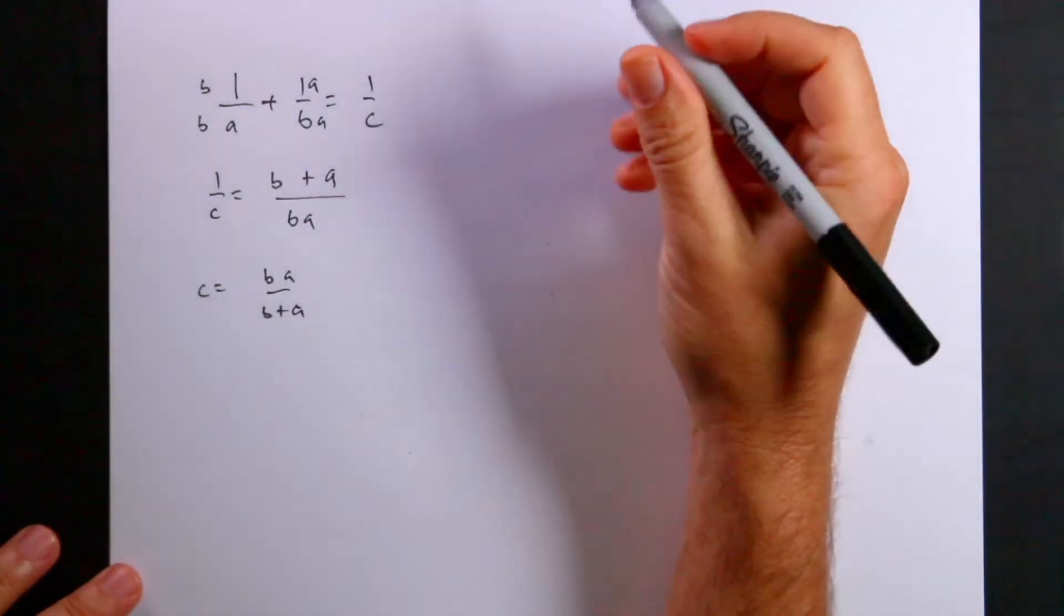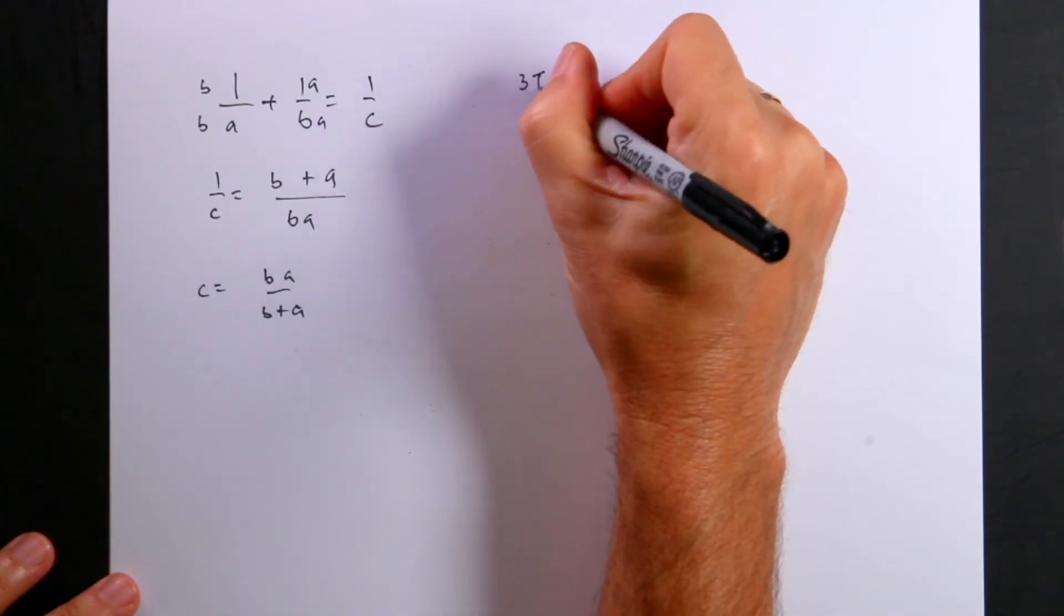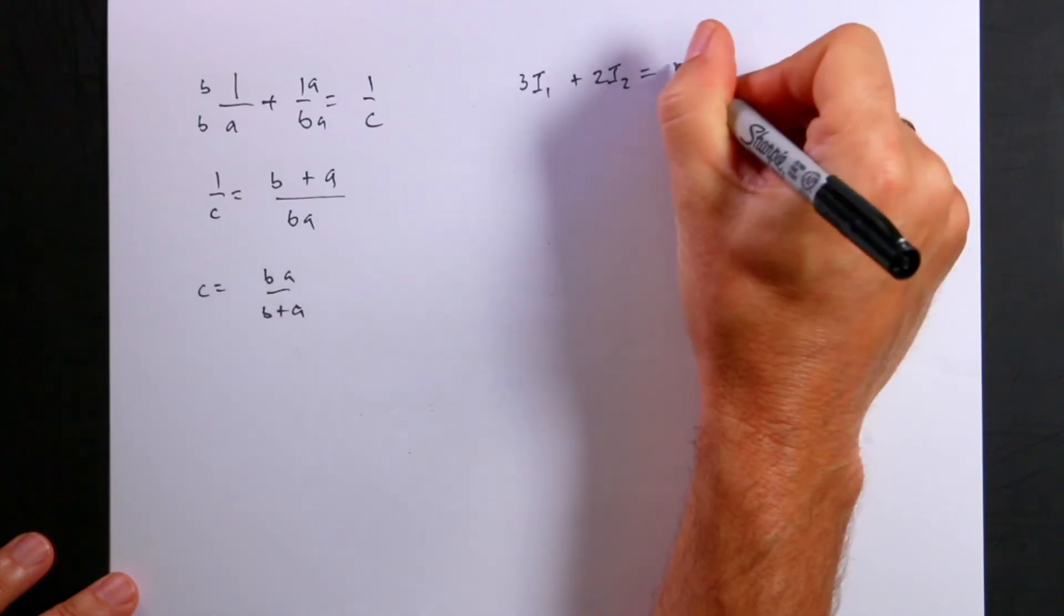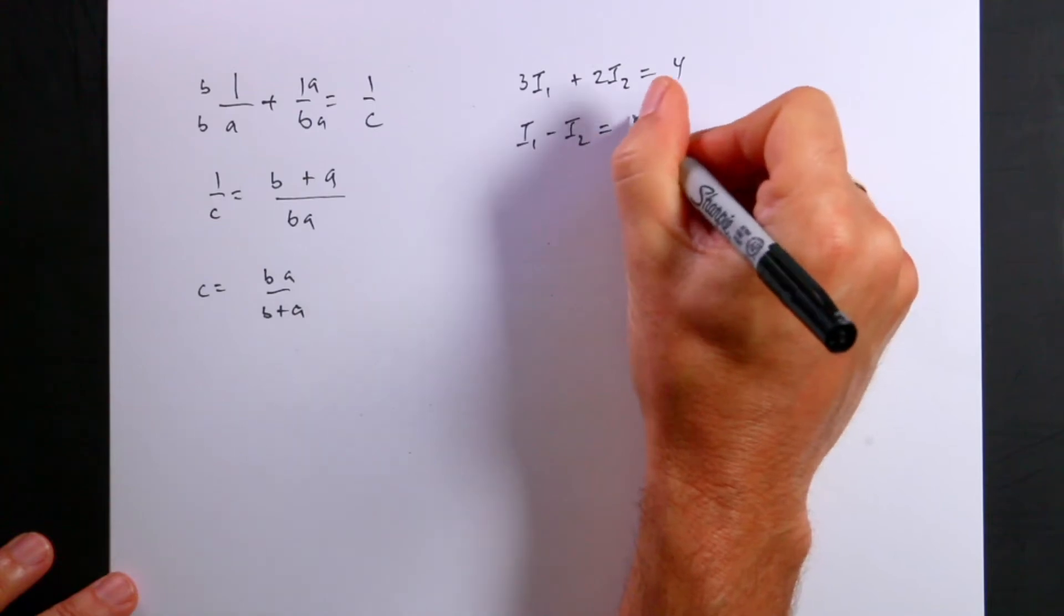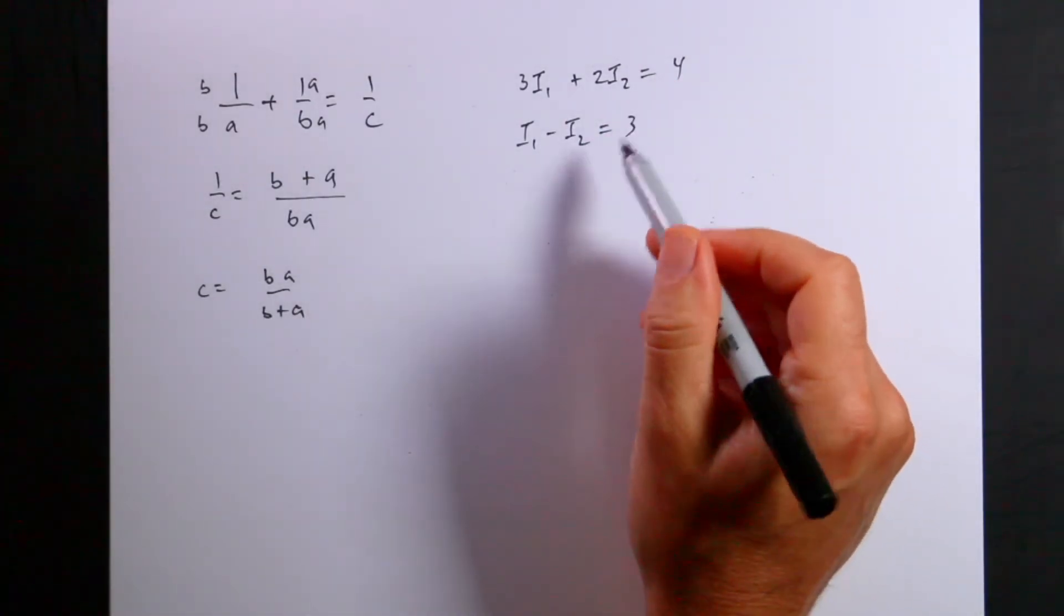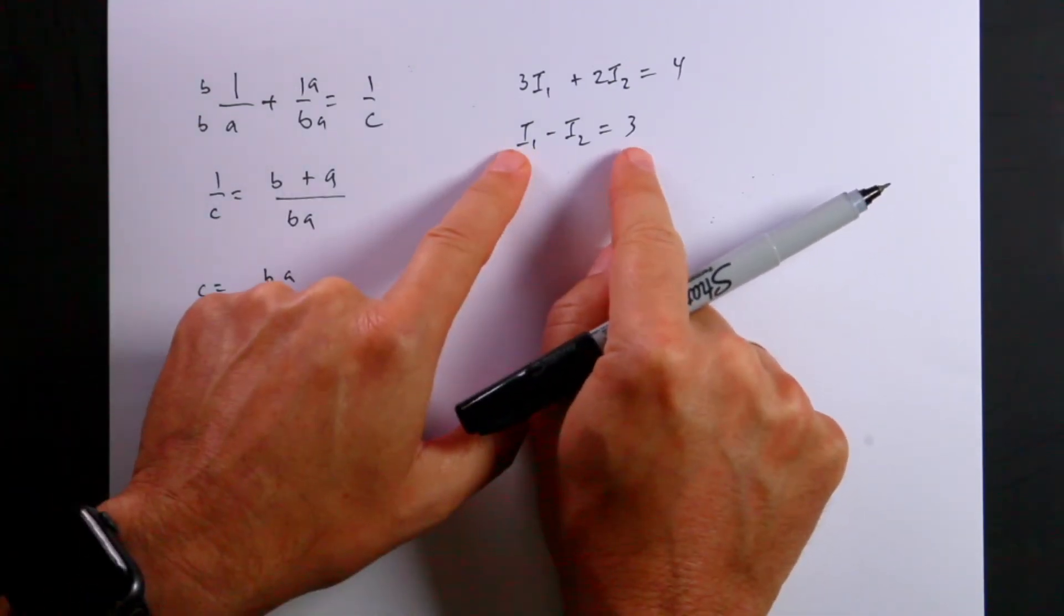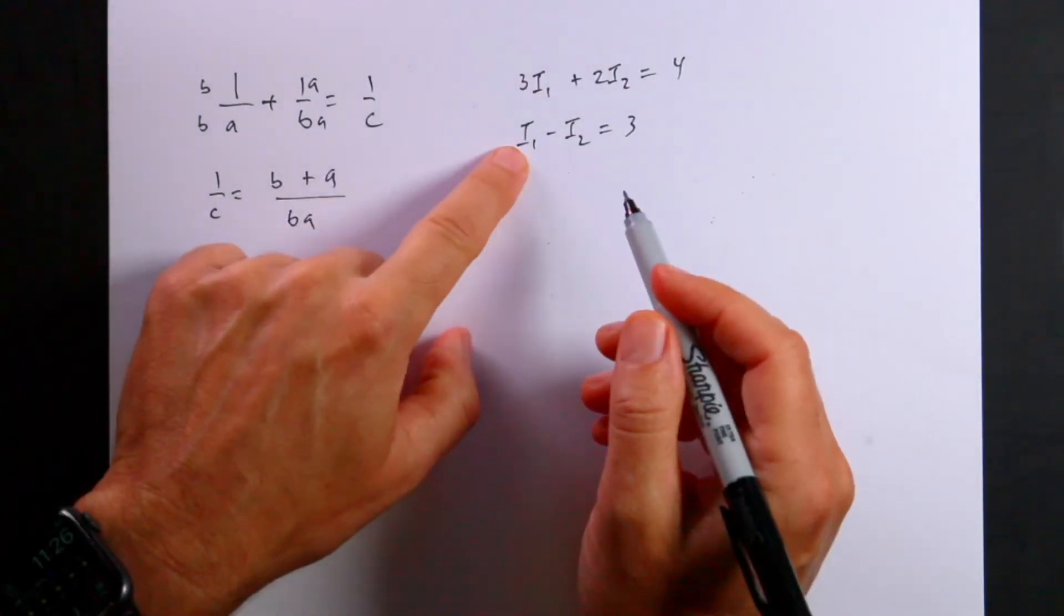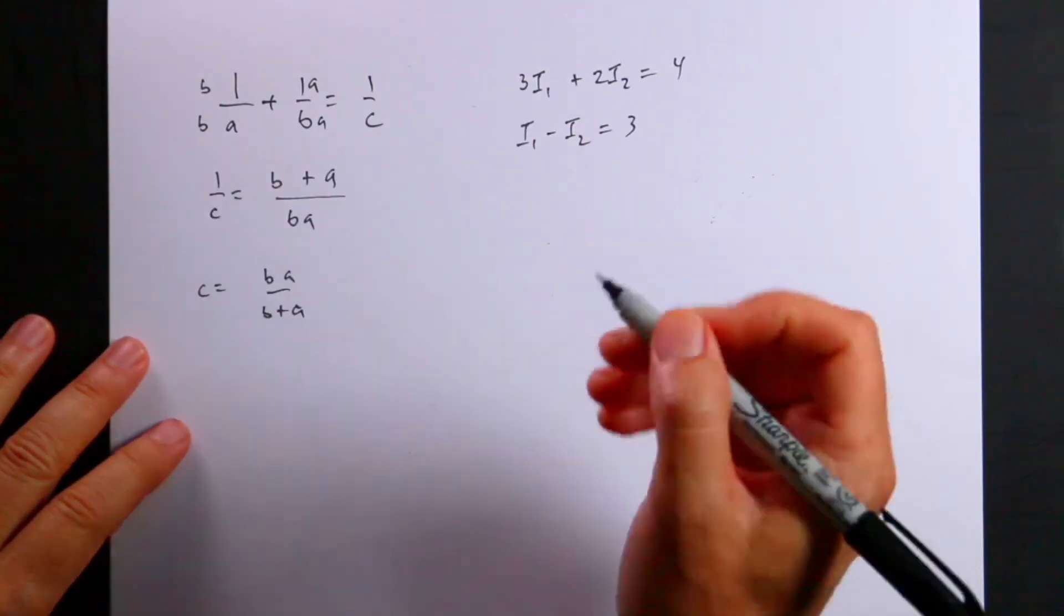Solving two equations, two unknowns comes up. You'll get something like 3I1 plus 2I2 equals 4, and then I1 minus I2 equals 3. I'm just making up stuff. How do you solve two equations, two unknowns? I'll remind you that in this case, you could multiply this by negative 3 and then add it. But I would encourage you to solve for one variable and then plug it into the other one.